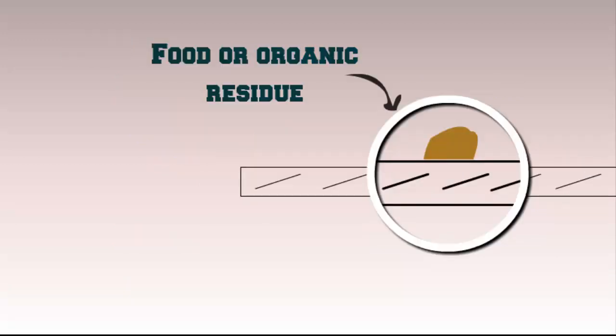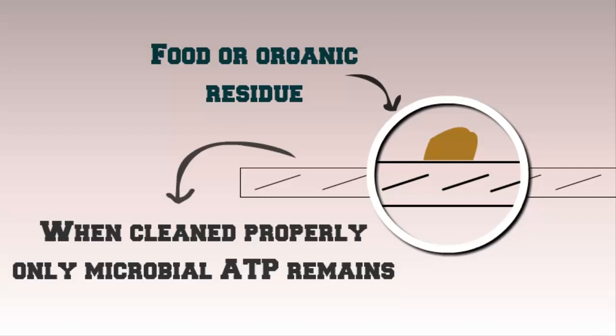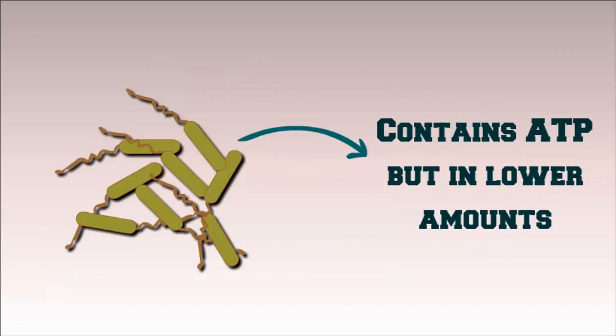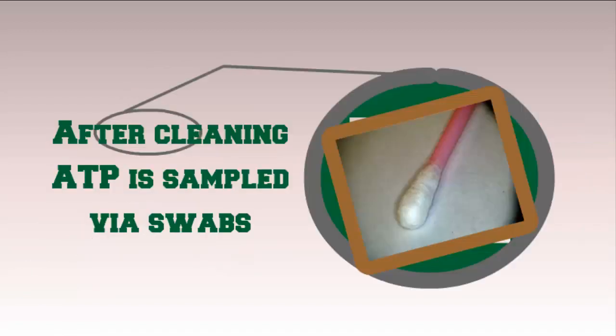Any food or organic residue on a surface will contain high levels of ATP. However, if the surface is cleaned properly, the only adenosine remaining should be the microbial one, which is normally in lower amounts. In the food industry, this characteristic is used to validate cleaning processes.